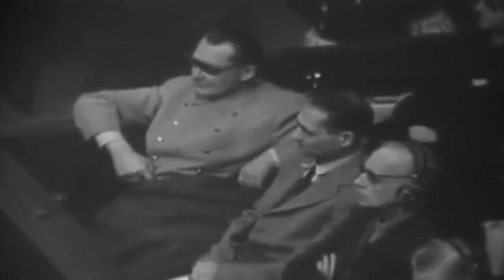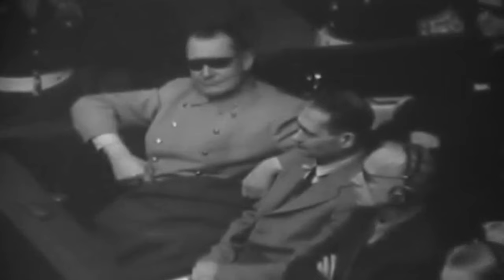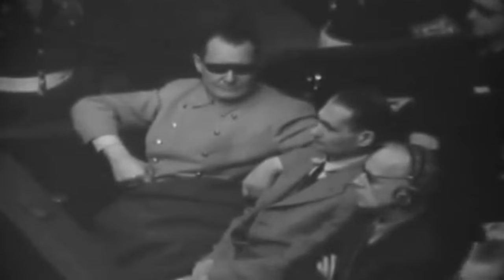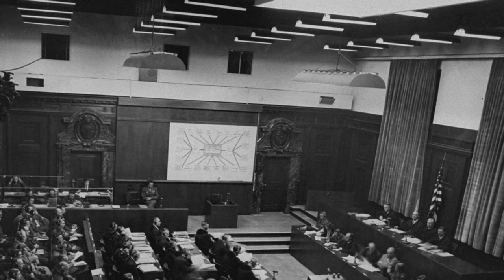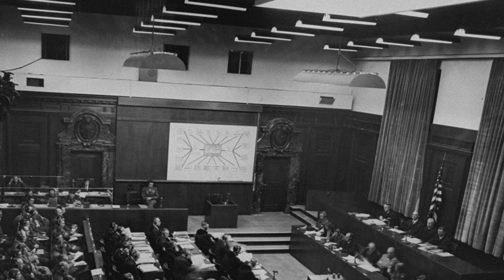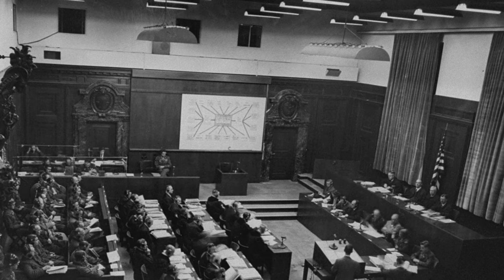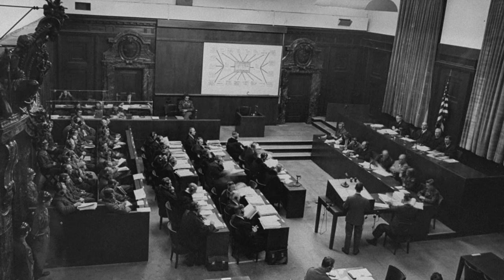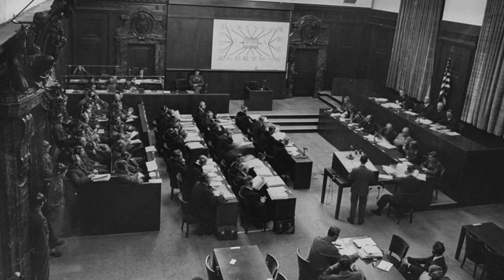After the main Nuremberg trial — a joint effort by the United States, Soviet Union, United Kingdom and France to try the leaders of the Third Reich — the US alone held 12 more subsequent trials to judge other people alleged to have been involved in the crimes of the National Socialist regime. The first subsequent trial was the Nuremberg Doctors' Trial, which took place from 9 December 1946 to 20 August 1947 in the very same Nuremberg Palace of Justice. The American military tribunal was in session for 139 days of proceedings.